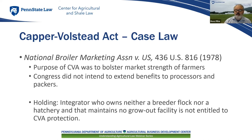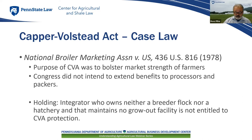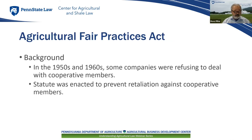If the integrator had a breeder flock, a hatchery, or a facility where they were raising broilers themselves, they were considered a farmer entitled to Capper-Volstead protection. If an integrator had no facilities where they were actually raising poultry, they were not considered a farmer and not entitled to Capper-Volstead protection. Having even one member who does not meet the farmer requirement removes Capper-Volstead protection from the entire cooperative. There was a vigorous dissent arguing this essentially tied antitrust liability to land ownership.